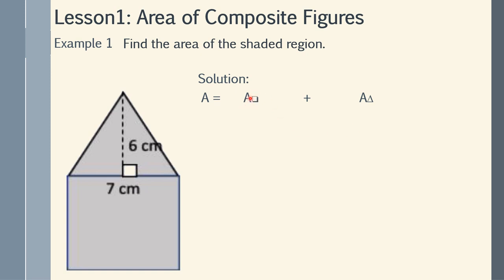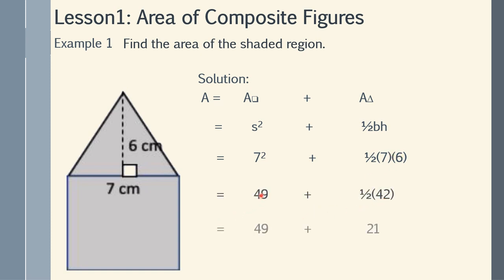Substituting the formula for the square, A equals s squared, and for the triangle, it's one-half base times height. The side of the square is 7, so that's 7 squared. The base of the triangle is 7 and the height is 6. Computing: 7 squared is 49, and one-half times 7 times 6 equals one-half of 42, which is 21. So the area is 49 plus 21 equals 70 cm squared.